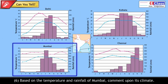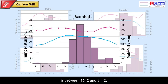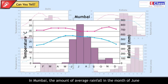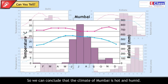Based on the temperature and rainfall of Mumbai, comment upon its climate. The average range of minimum and maximum temperatures of Mumbai is between 16°C and 34°C. The average rainfall in June is nearly 450 mm and in July nearly 720 mm. We can conclude that the climate of Mumbai is hot and humid.